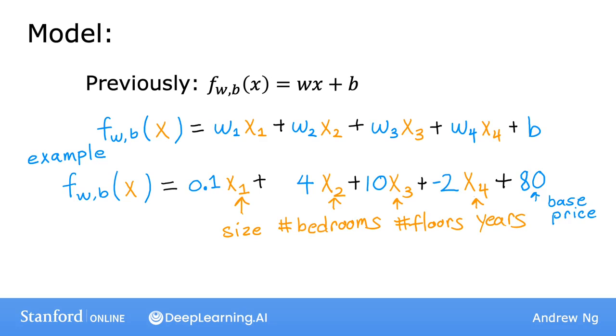Let's think about how you might interpret these parameters. If the model is trying to predict the price of the house in thousands of dollars, you can think of b equals 80 as saying that the base price of a house starts off at $80,000. The 0.1 means that for every additional square foot, the price will increase by $100. For each additional bathroom, the price increases by $4,000. For each additional floor, the price may increase by $10,000. And for each additional year of the house's age, the price may decrease by $2,000 because the parameter is negative 2.